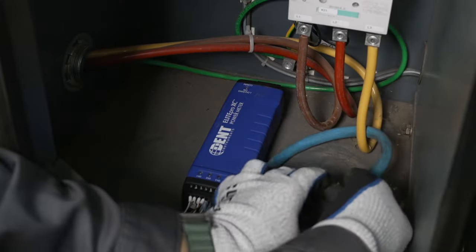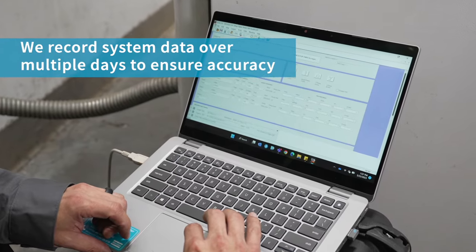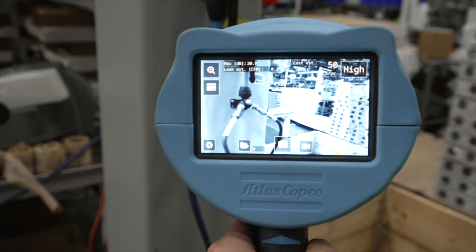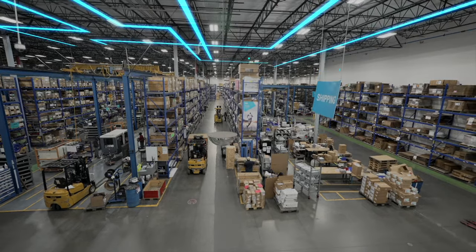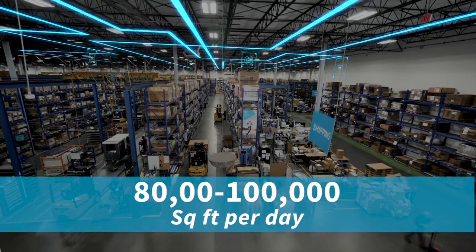We install energy loggers and hot tap flow meters, capturing all data digitally. We inspect the entire plant for leaks using advanced acoustic cameras. We can perform leak detection on a scale of 80,000 to 100,000 square feet per day.